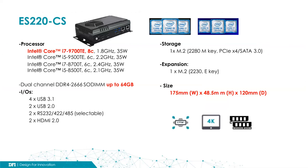The target market for this model includes machine inspection for factory automation, intelligent license plate recognition, facial recognition in public spaces, and public space recognition. The ES220-CS is a compact size edge computer, also supporting 9th generation Core processors and up to 64 gigabytes of RAM.